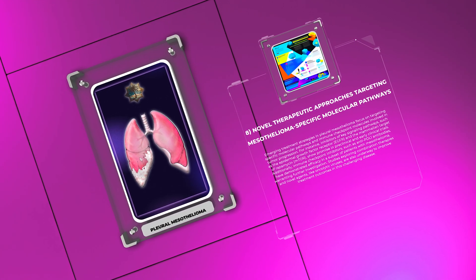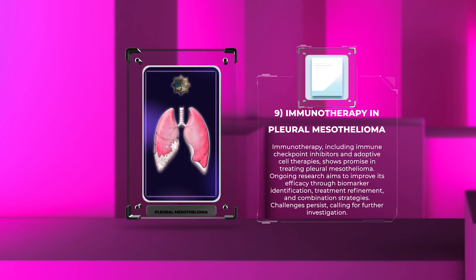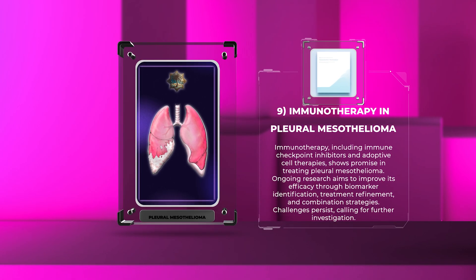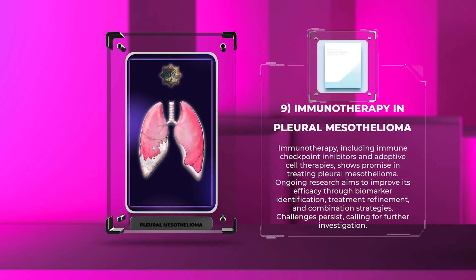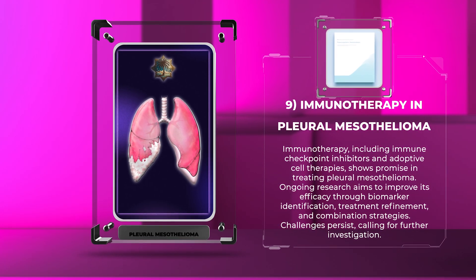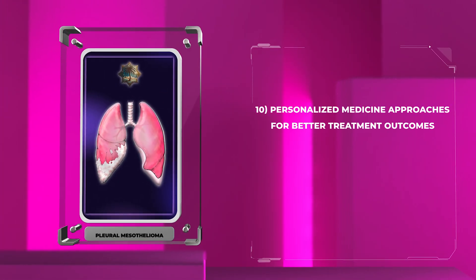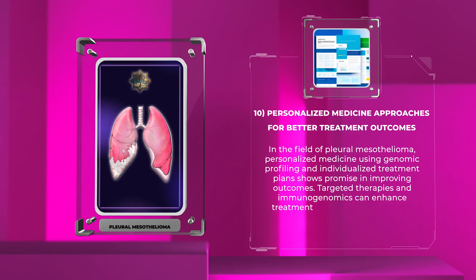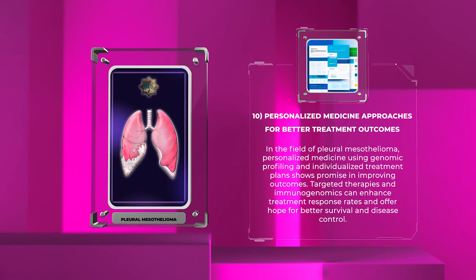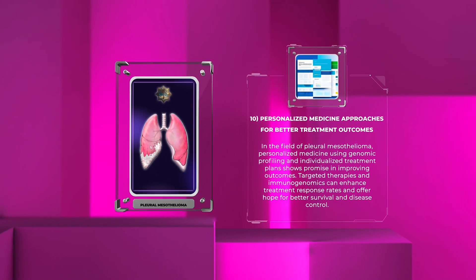Studies exploring combination therapies and novel agents like oncolytic viruses are also underway to improve treatment outcomes. Immunotherapy, including immune checkpoint inhibitors and adoptive cell therapies, shows promise in treating pleural mesothelioma. Ongoing research aims to improve its efficacy through biomarker identification, treatment refinement, and combination strategies. Personalized medicine using genomic profiling and individualized treatment plans shows promise in improving outcomes; targeted therapies and immunogenomics can enhance treatment response rates.